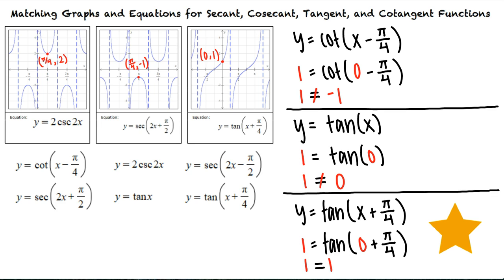Okay, so when matching graphs and equations for secant, cosecant, tangent, and cotangent functions, we can narrow our options by looking at the shape of the graph. Once we have narrowed our options, we can select a point on the graph and test each function to see if that point is a solution for the equation. That's exactly right. Great work.